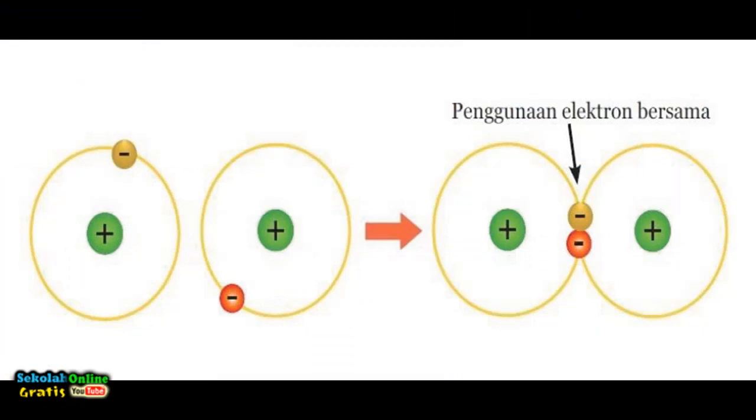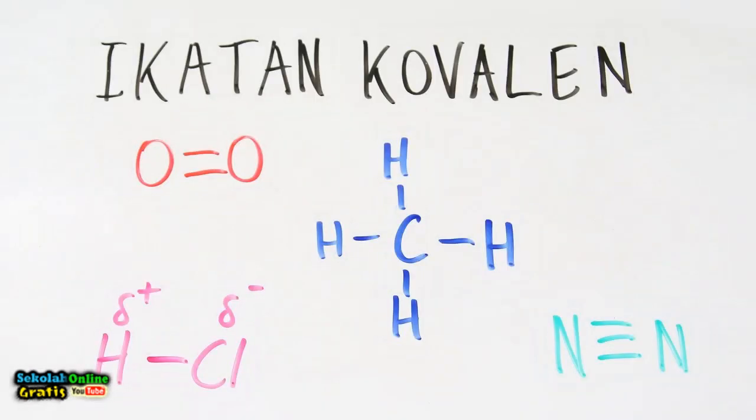Atoms can share electrons. For example the hydrogen atom H has one atom. So it will be stable if it accepts electrons or bonds to each other with H atoms to form H2. Here's a picture of the use of hydrogen electrons simultaneously. A chemical bond through the sharing of electrons between two atoms is called a covalent bond.